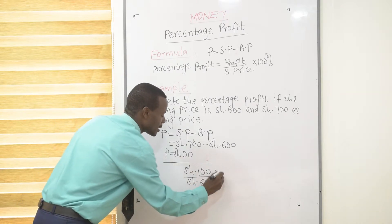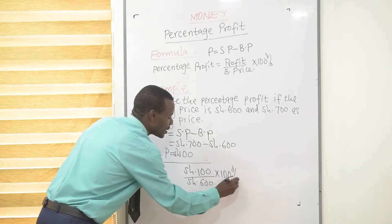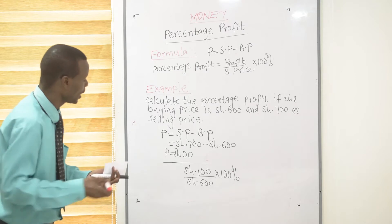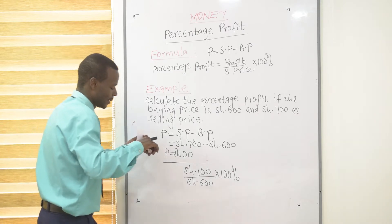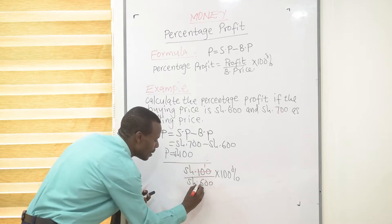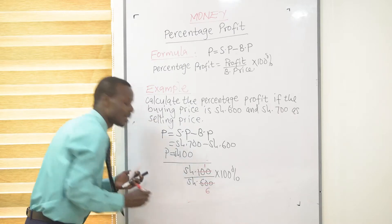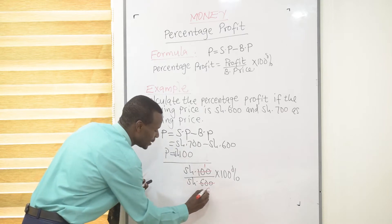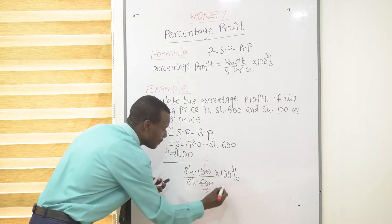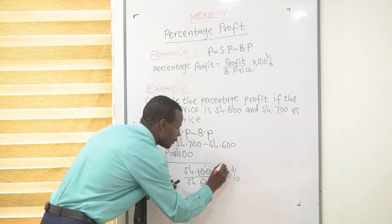Then multiply this by 100%. You simplify the figures: 100 divided by 100 is 1, 600 divided by 100 is 6. Then by 2, which is the highest common factor here, 6 divided by 2 is 3, and by 2 is 50. Now,